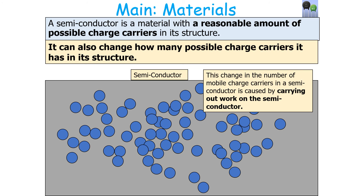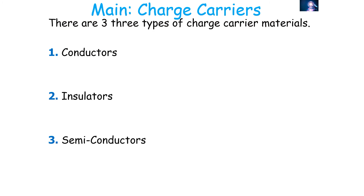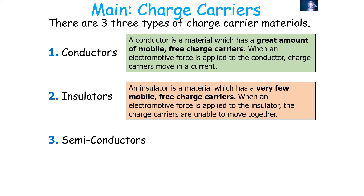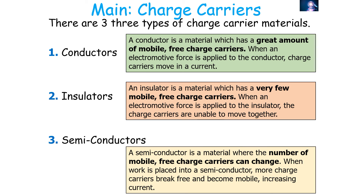A semiconductor is a material with a reasonable amount of possible charge carriers, but crucially it can also change how many mobile charge carriers it has in its structure. This change is caused by carrying out work on the semiconductor. So when work is applied to a semiconductor, more charge carriers can break free and become mobile, increasing the current.